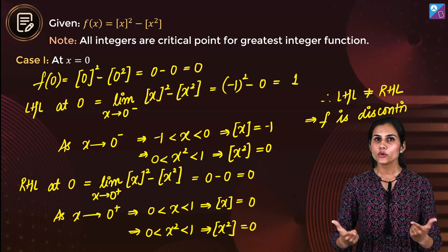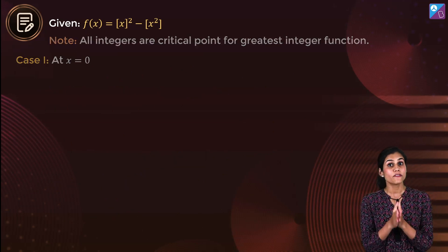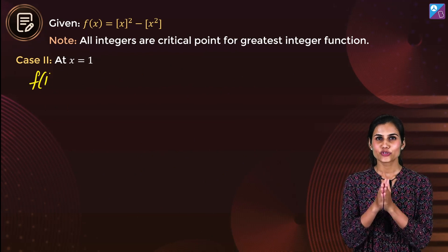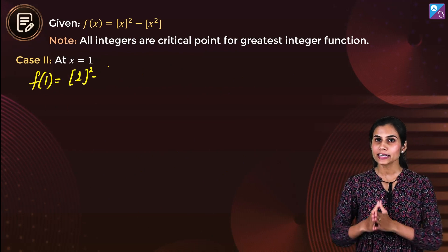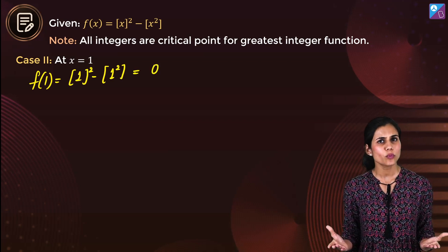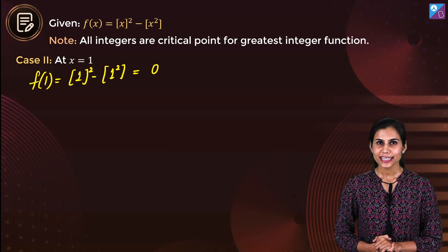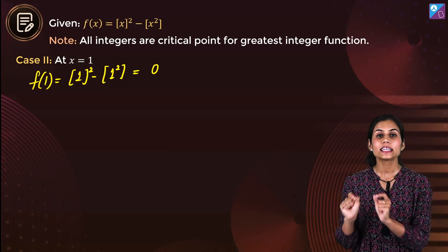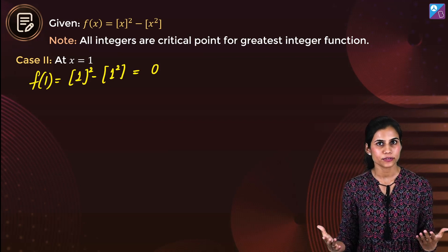Moving on to the next critical point, that is 1. What is the value of the function at 1? It is GIF(1) whole squared minus GIF(1²). GIF(1) is 1, so you get 1 − 1, that is 0. Basically, the function f gives 0 as the answer at every integral input.